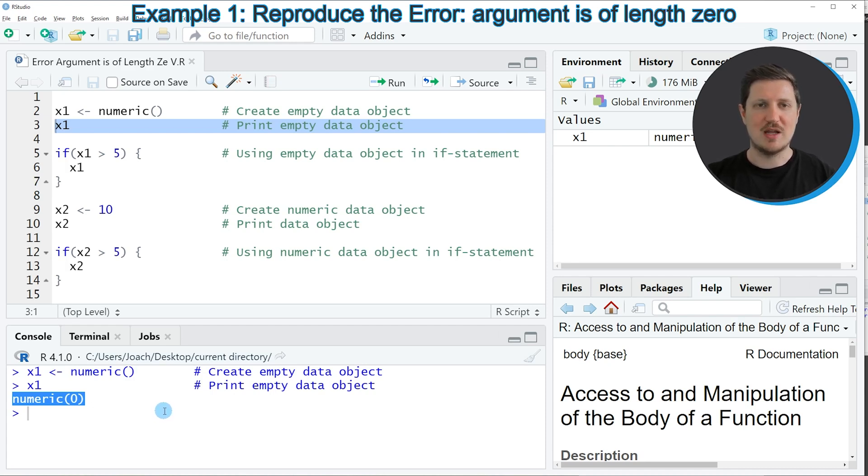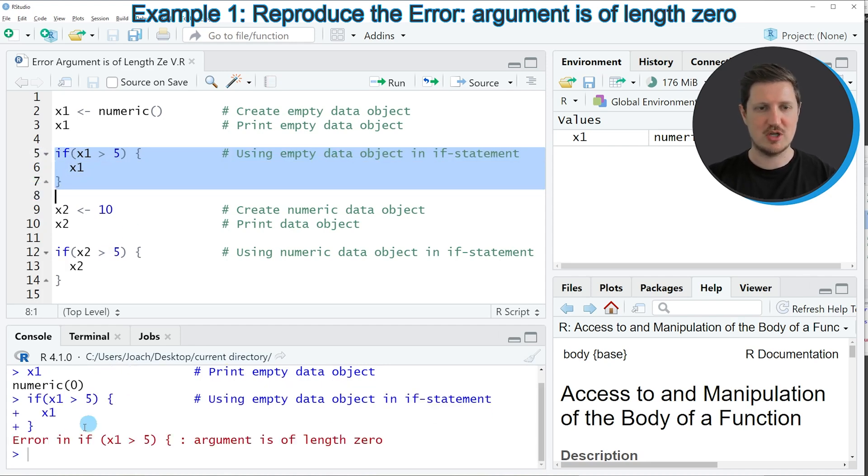So if we want to apply an if condition to this data object, then we might try to apply the code that you can see in lines 5 to 7. In these lines of code, I'm using the if statement and checking if the values in X1 are larger than 5. If you run these lines of code, you can see that the error message 'error in if: argument is of length zero' is returned.